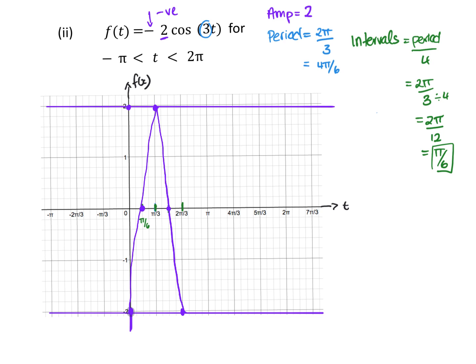It goes like that. If you divide up all your intervals and keep going, they want us to go up to 2π. In terms of thirds, 2π equals 6π/3, so we'll go all the way up there.